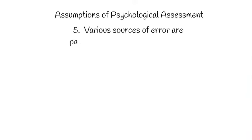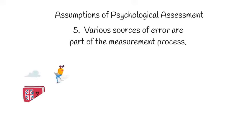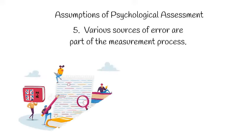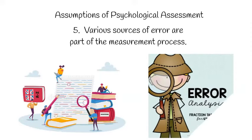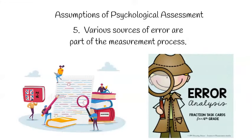The fifth assumption is that various sources of error are always present in the measurement process. The key here is to learn the techniques to minimize these sources of error or to mitigate their effects so that the results of assessment can be useful and not invalid.